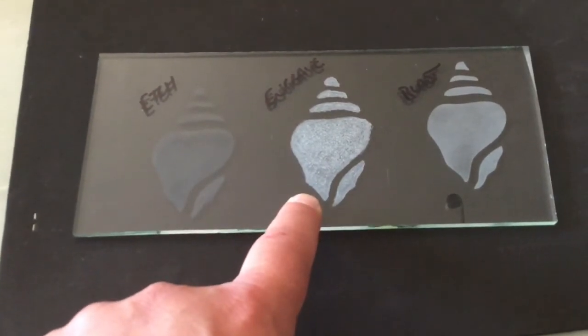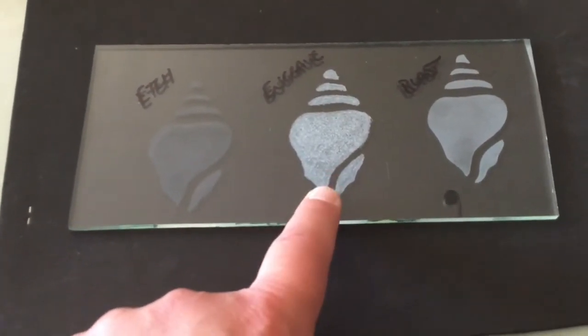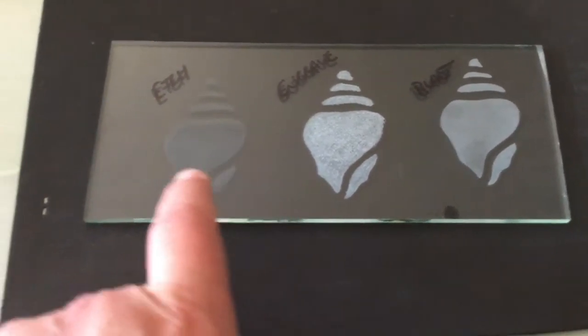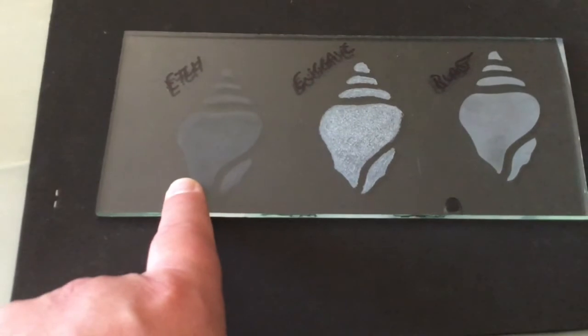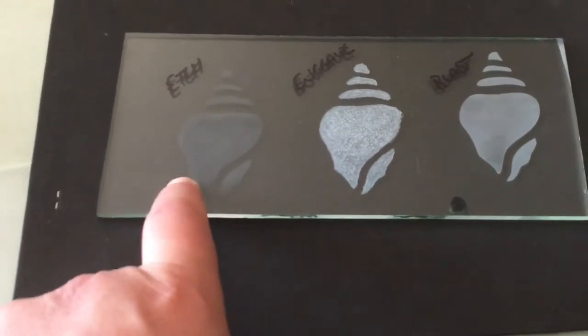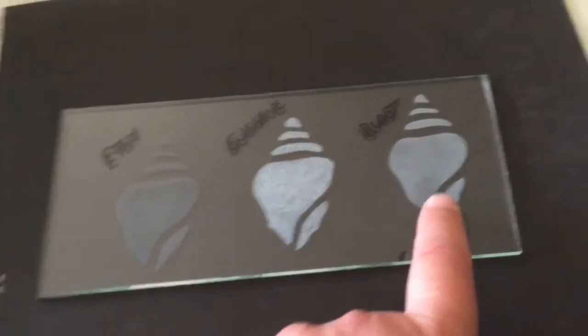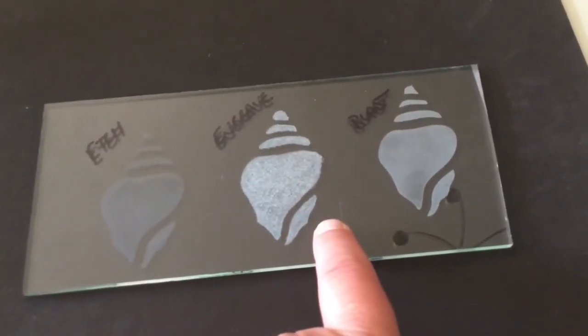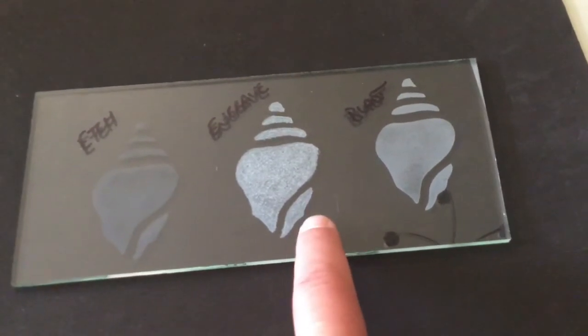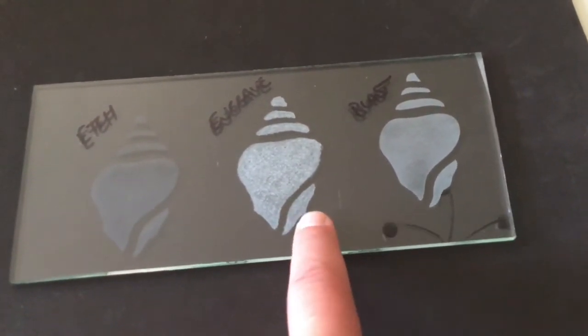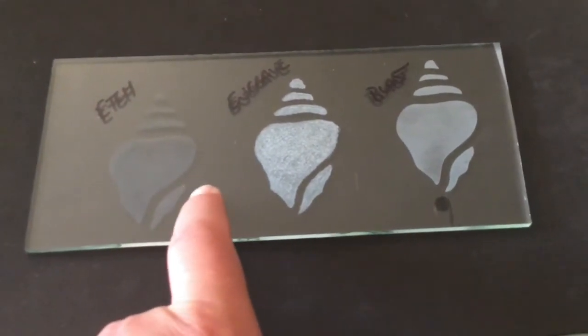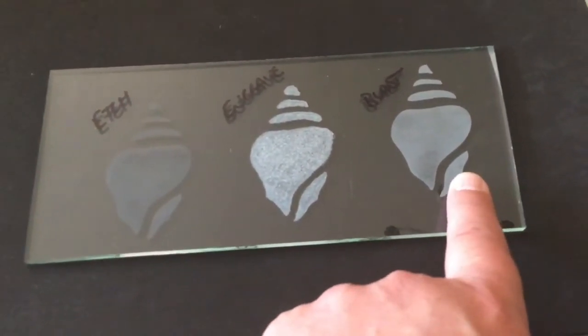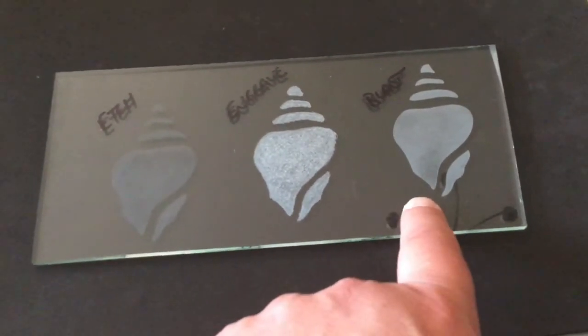The engraving's just with a Dremel 3000, with some cheap diamond burrs that you get off Amazon, eBay, etc. And the etching's with the Armour Etch cream. So the first one we'll do is the blasting, and that'll be the next part. When we do the engraving, the video will be sped up and I've cut bits out of it because it took about 10-12 minutes to do that. The etching elapsed time was about 6-7 minutes, blasting seconds. So, into the blasting we go.